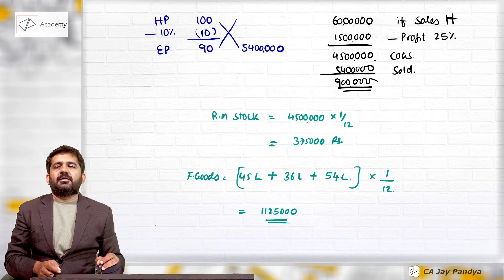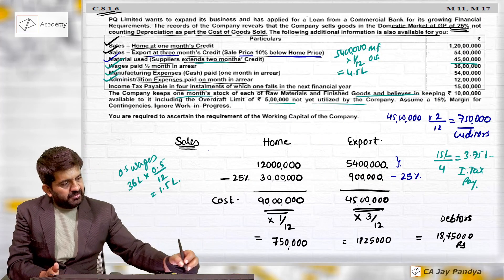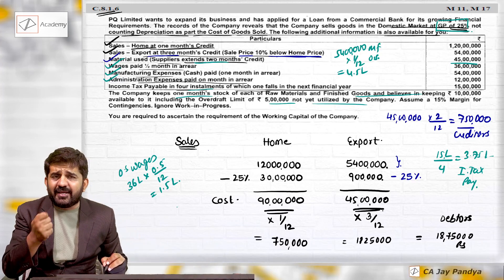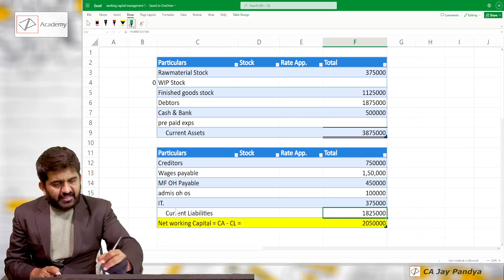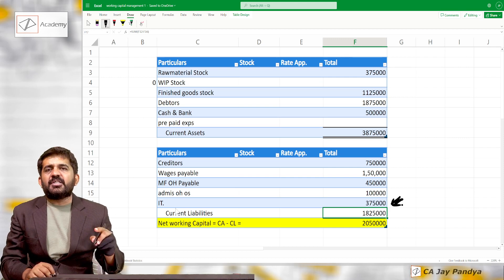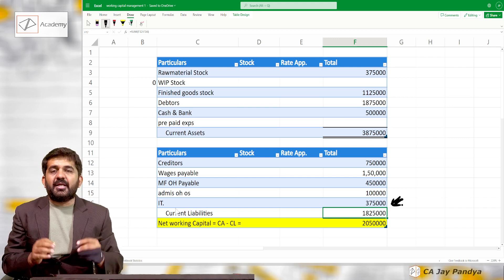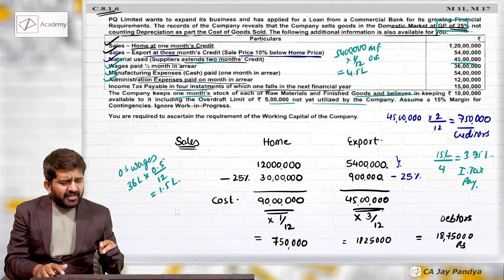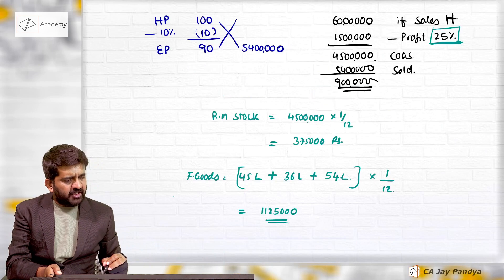This answer does not match the suggested answer in the book for two reasons. First, the book incorrectly uses 20 percent instead of the clearly stated 25 percent GP for export sales calculation. Second, some solutions do not consider income tax as a current liability, treating it instead as a current asset. Both are errors in the suggested solution; our approach using 25 percent and income tax as a liability is correct.